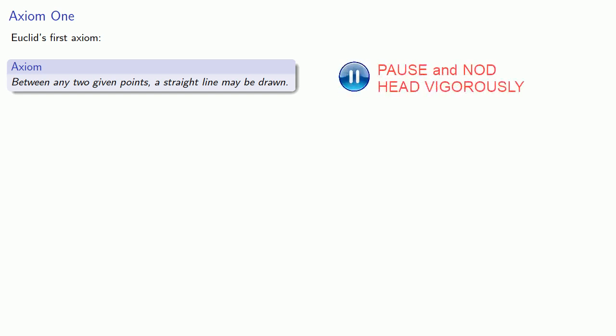Euclid's first axiom. Between any two given points, a straight line may be drawn. And this seems to fit the nature of this idea of a universal truth that everyone would agree with. There are some caveats.